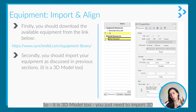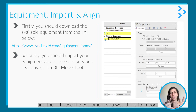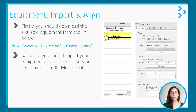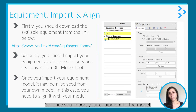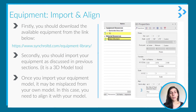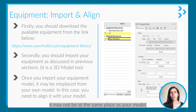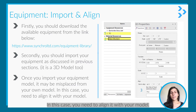It is a 3D model too, so you just need to import 3D and then choose the equipment you would like to import. Once you import your equipment to the model, it may not be at the same place as your model, so in this case you need to align it with your model.